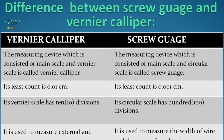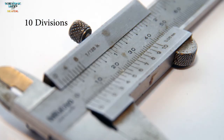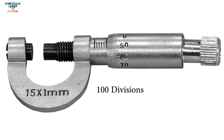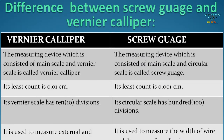The second point: the least count of Vernier caliper is 0.01 cm, and in screw gauge its least count is 0.001 cm. Next point: the vernier scale has 10 divisions, and the circular scale of screw gauge consists of 100 divisions.